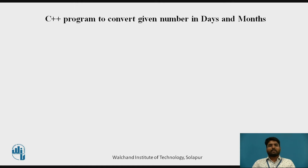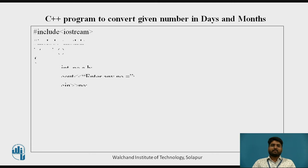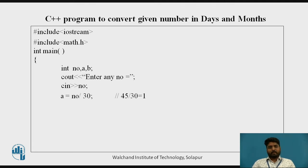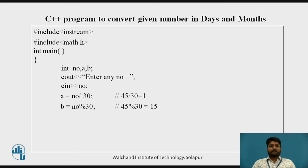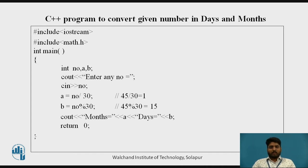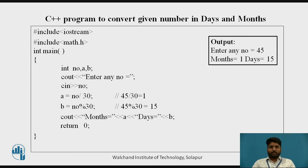The next program converts a given number in days to months. We are using two header files and taking three variables: int number, a, b. Cout asks the user to enter any number, which is stored in number. Here a equal to number divided by 30, and b equal to number modulus 30. For example, if a user enters 45 as a number: 45 divided by 30 gives quotient 1, and 45 modulus 30 gives remainder 15. The output will be months equal to 1 and days equal to 15. This program is only for months with 30 days.